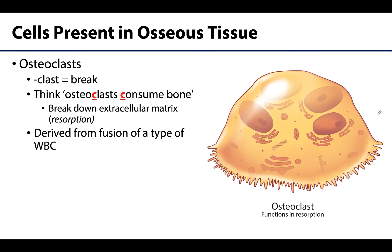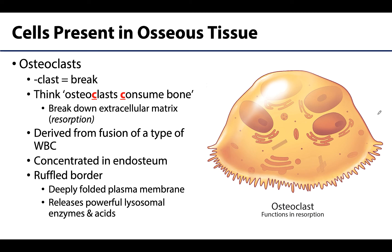The fourth bone cell is a big one — the osteoclast. Clast means break or break down, and this is exactly what an osteoclast does. Think of osteoclast with a C: consume or break down bone. It will break down the extracellular matrix, which sounds pathological, but is very much a natural and necessary process in maintaining a healthy skeleton, as long as these processes are in line with the osteoblasts or bone-building cells. Osteoclasts have a different origin, developing from the fusion of many monocytes, which are a type of white blood cell, making them a comparatively large cell.